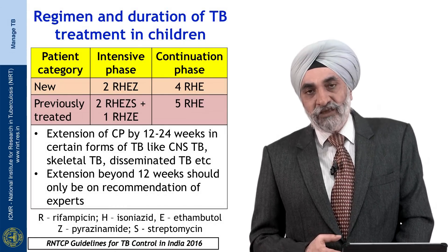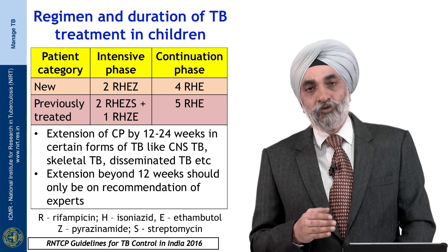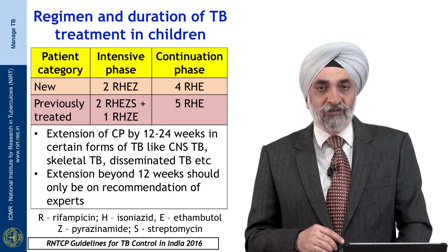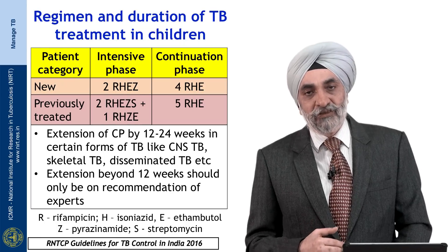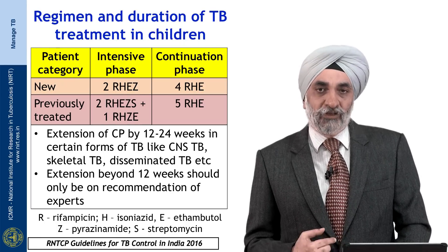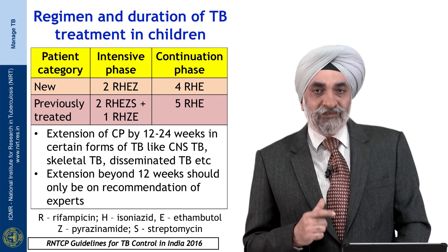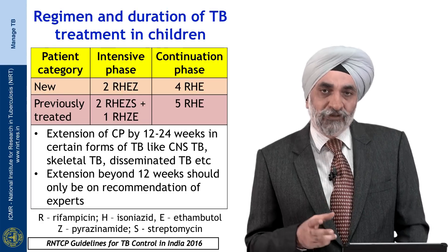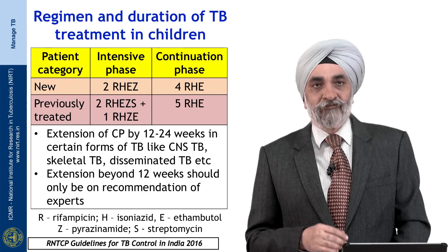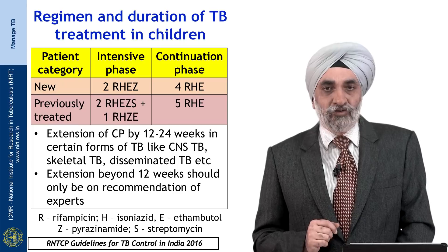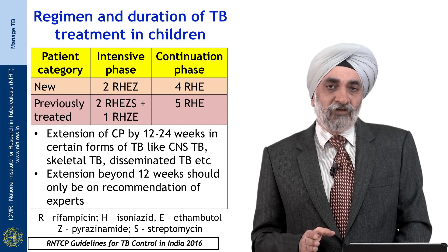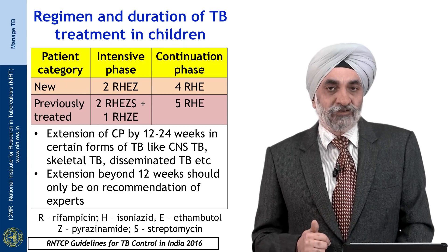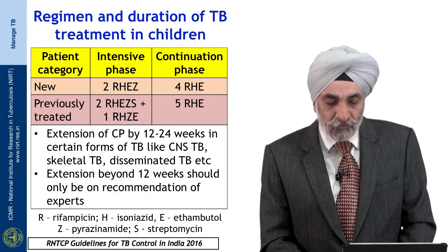If sensitivity results are not available, we continue the 5-drug regimen for 2 months; after this intensive phase, streptomycin is dropped and the intensive phase continues with 4 drugs for another month. So the intensive phase in retreatment is biphasic: 2 months with 5 drugs, then 1 month with 4 drugs. Thereafter, 5 months of a 3-drug continuation phase follows. This continuation phase is also extended by 3 months for TB meningitis and osteoarticular TB, as with new cases.